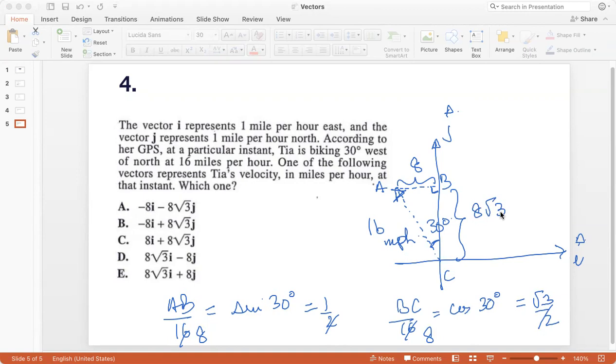So how do I determine the vector? Here, I can see that vector c a, which is actually Tia's velocity, which is what we have to find, is vector c b plus vector b a, because c b plus b a will give you c a by the concept of addition.